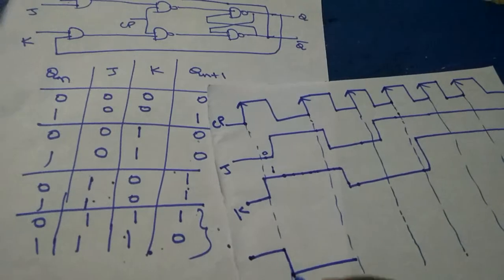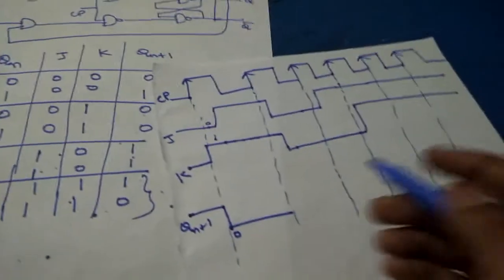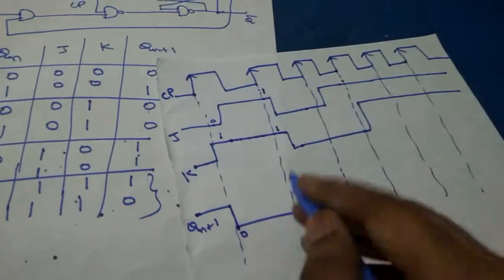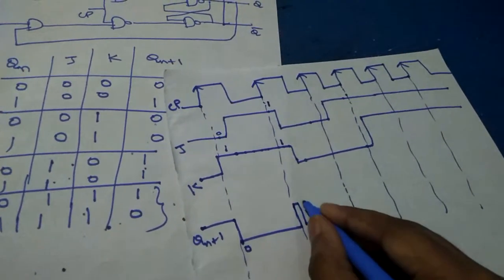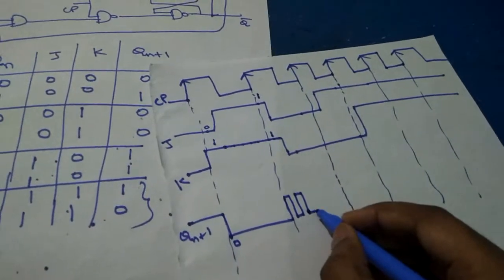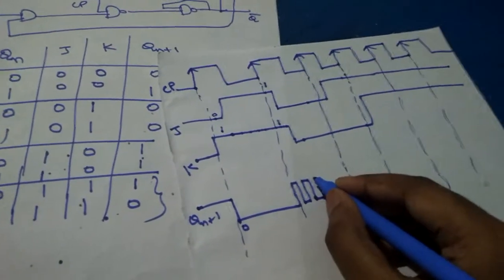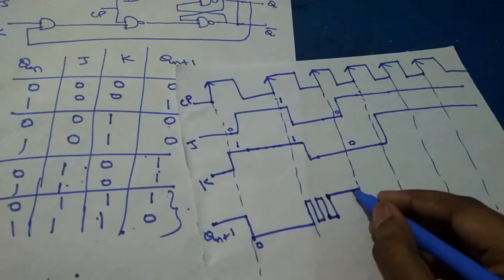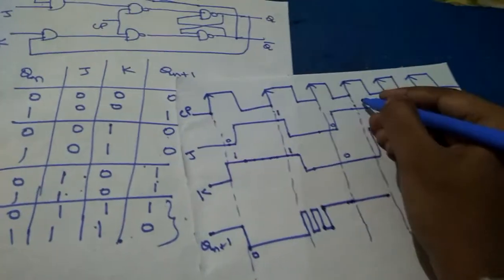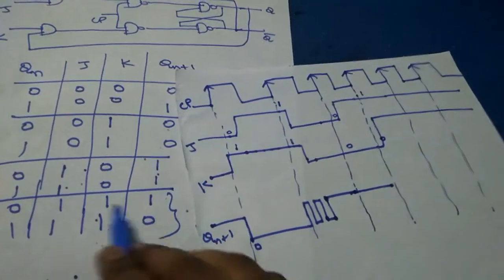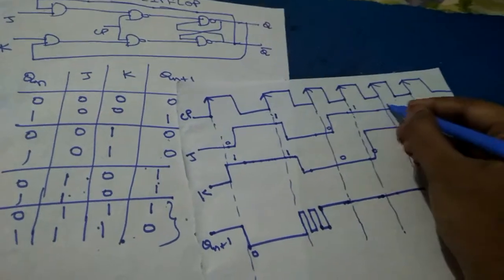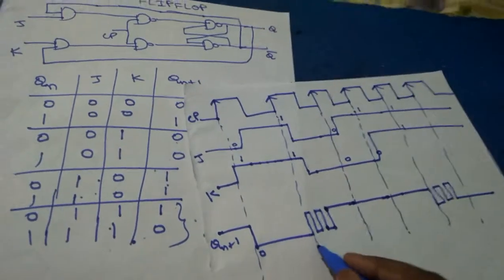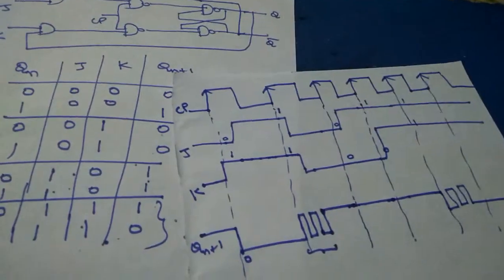The output will be zero and will continue till the next clock pulse. For J=1, K=1, we get the toggle condition — the output oscillates for some time, then settles to a constant value. For J=0, K=0, it continues as 1. For J=1, K=0, it remains 1. For J=1, K=1 again, it toggles and oscillates. This is called the toggle condition, and these are the timing waveforms.